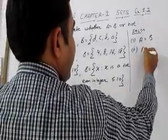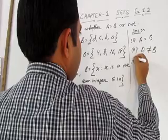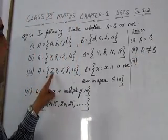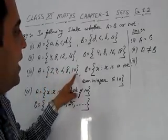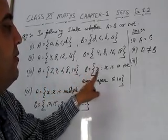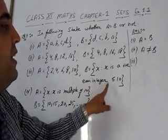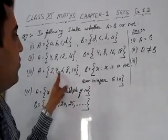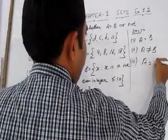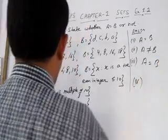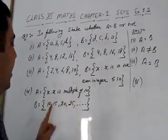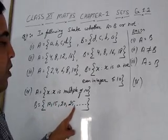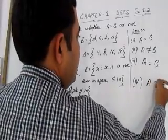12 is present in A but not in B, and 18 is present in B but not in A, therefore A is not equal to B. In the third part, set A is {2, 4, 6, 8, 10} and set B is {x : x is a positive even integer less than or equal to 10}, which gives {2, 4, 6, 8, 10}, so A is equal to B. In the fourth part, A is {x : x is a multiple of 10} and B is {10, 15, 20, 25, ...}. Since 15 and 25 are not multiples of 10, A is not equal to B.